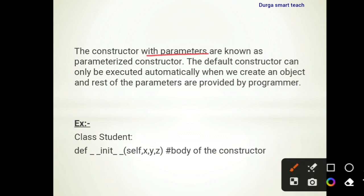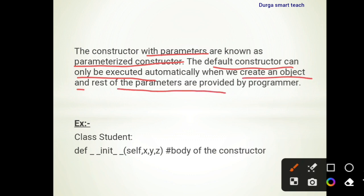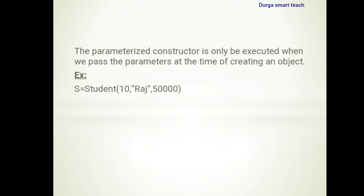A constructor that contains parameters is known as a parameterized constructor. The default constructor is executed automatically when we create an object; the rest of the parameters are provided by the programmer. For example, class Student with def __init__(self, x, y, z) — it contains three parameters, so it is known as a parameterized constructor.